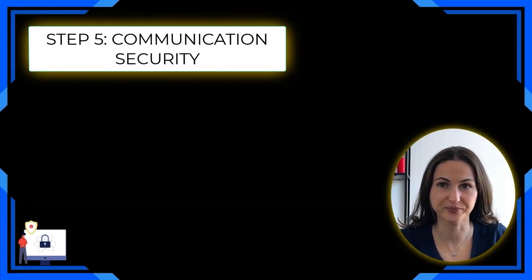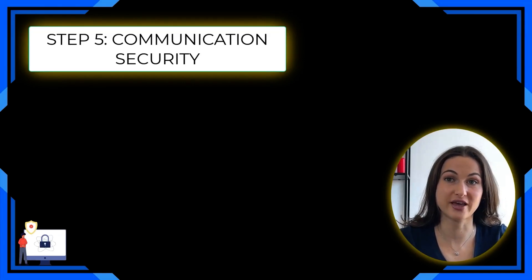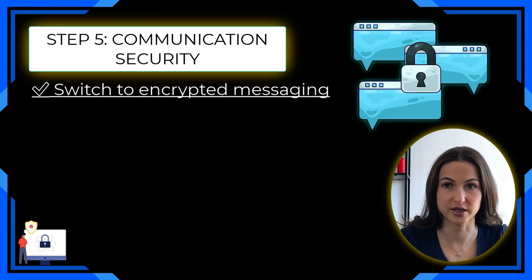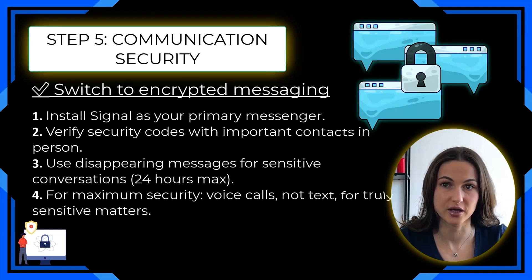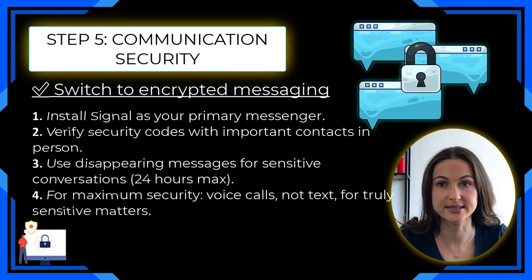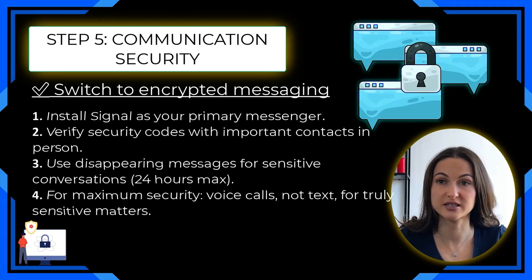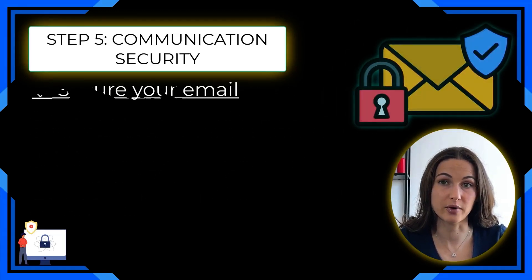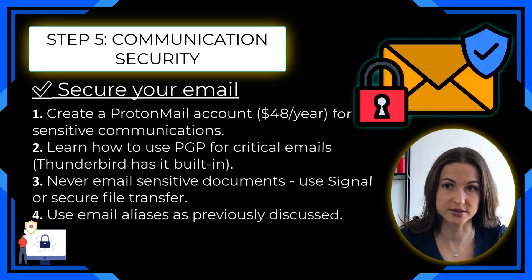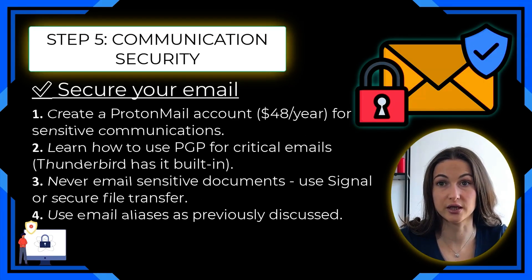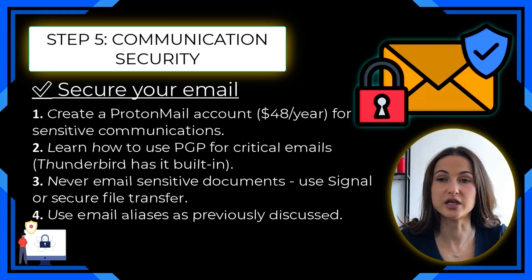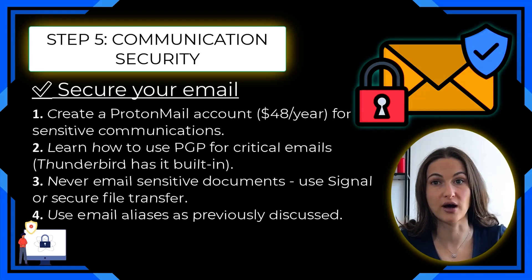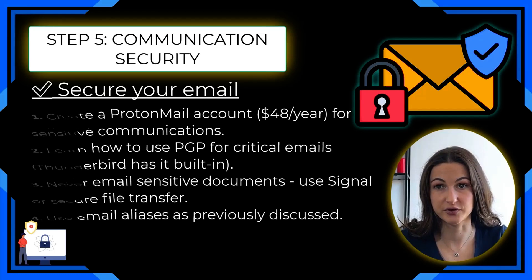Step number five: communication security. Secure your communications or accept that they are being monitored. Switch to encrypted messaging — install Signal as your primary messenger, verify security codes with important contacts in person, and use disappearing messages for sensitive conversations set to a maximum of 24 hours. For maximum security, use voice calls rather than text for truly sensitive matters. Next, secure your email — create a ProtonMail account for sensitive communications, learn to use PGP encryption for critical emails (Thunderbird has it built in), never email sensitive documents, and use Signal or secure file transfer instead.